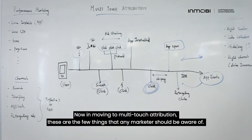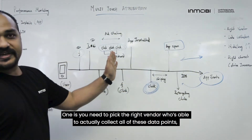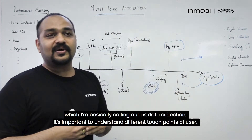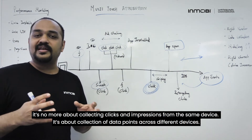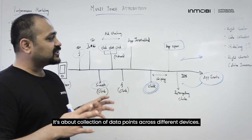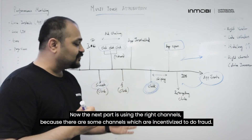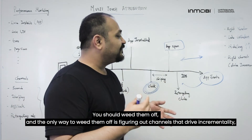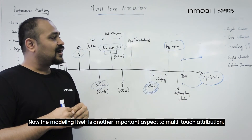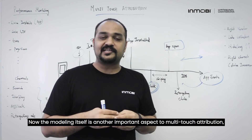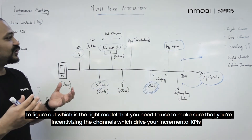In moving to multi-touch attribution, there are a few things any marketer should be aware of. First, you need to pick the right vendor who is able to collect all of these data points — what I'm calling data collection. It's important to understand different touch points of a user, especially as performance marketing moves to a cross-device environment. It's no longer about collecting clicks and impressions on the same device — it's about collecting data points across different devices. Next, use the right channels, because some channels are incentivized to commit fraud. The only way to weed them out is by finding channels that drive incrementality. Modeling is another important aspect — figuring out which model to use so you are incentivizing channels that drive your incremental KPIs.